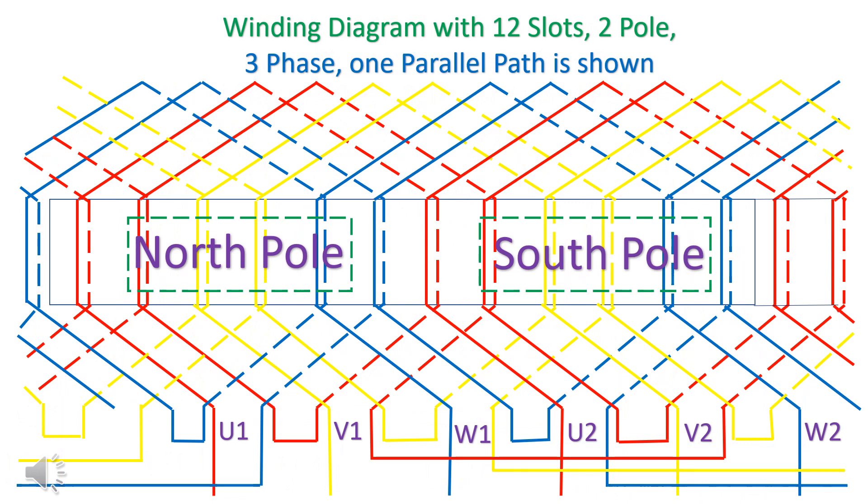Winding diagram with 12 slots, 2 poles, 3 phase, 1 parallel path is shown.